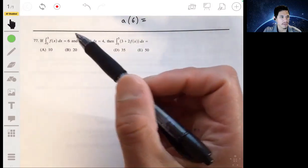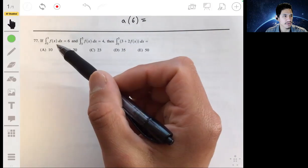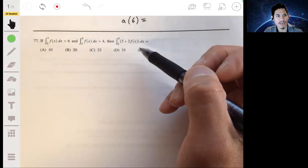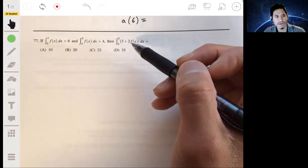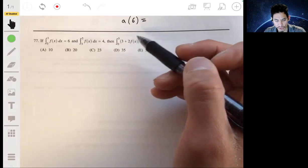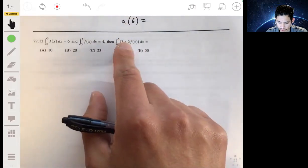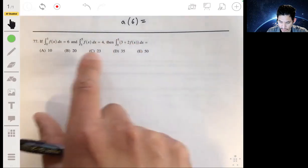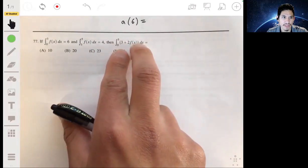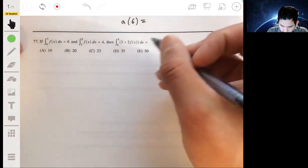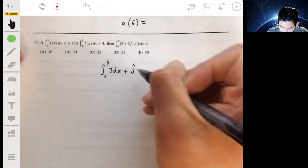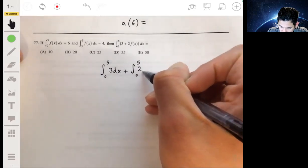Alright, 77. We're given that the integral from 0 to 3 of f of x is equal to 6, and the integral from 3 to 5 of f of x is equal to 4. We want to find the integral from 0 to 5 of 3 plus 2 times f of x. The idea here is to recognize that you're basically just going to calculate two integrals and then just add them together. Let me break this down step by step so you see exactly what. This is equal to the integral from 0 to 5 of 3 dx plus the integral from 0 to 5 of 2 f of x dx.